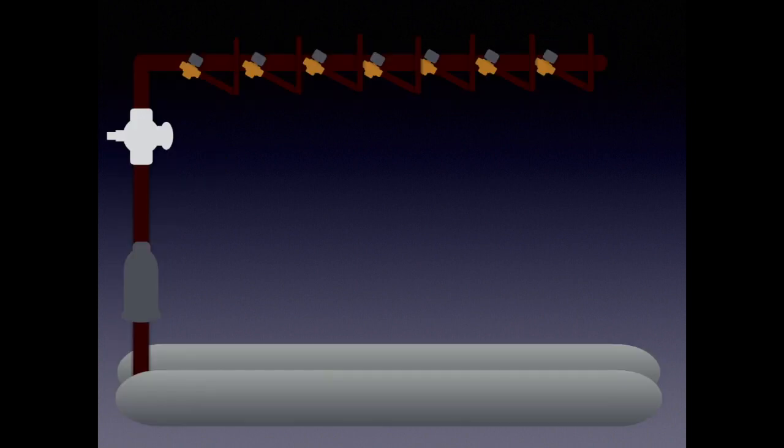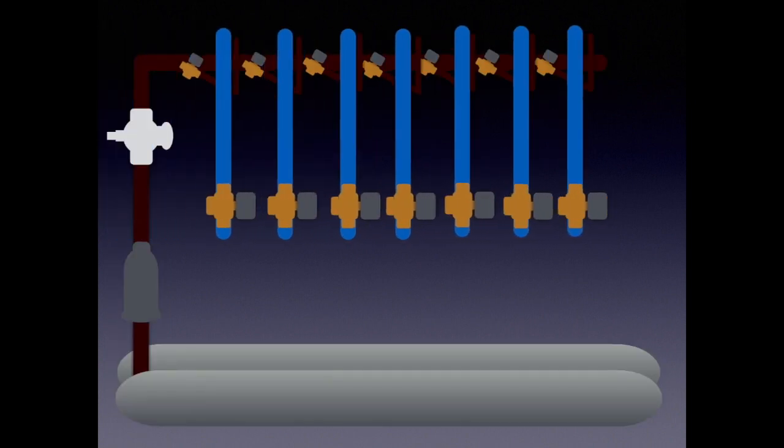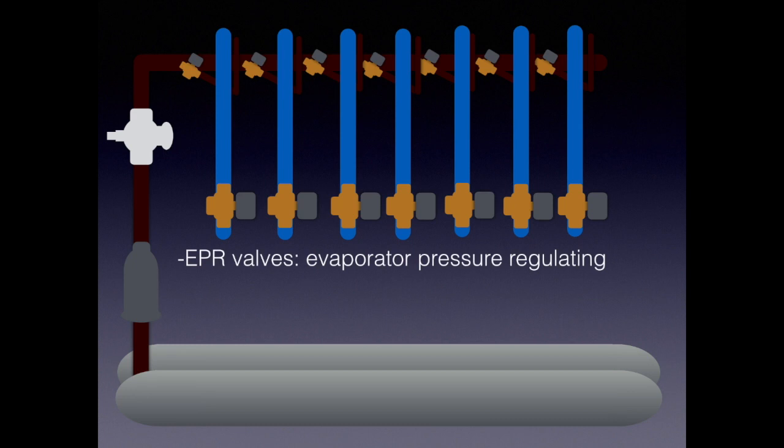But we're going to take you back to the rack system where those suction lines come back to the rack and into EPRs. Now EPRs are evaporator pressure regulators.